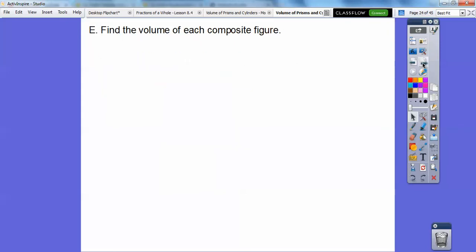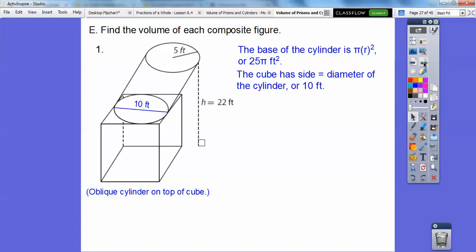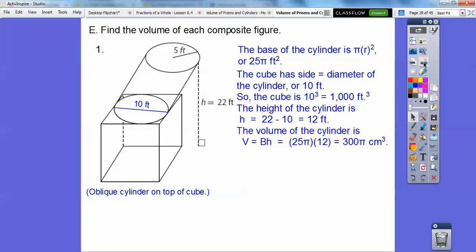Find the volume of each composite figure. So here we have this oblique cylinder on top of this cube right here. So we've got to figure out this cube. What's the length of this side? Well, if the radius is 5, then the diameter of this guy is going to be 10 right there. So the base of the cylinder is πr², so π times 5 squared is 25π, so that's the base of the cylinder. And then the cube has side equal to the diameter, which is 10 feet right there. So the cube is 10 cubed, which is 1,000 cubic feet.